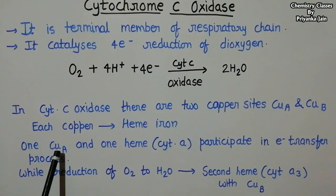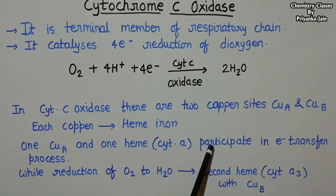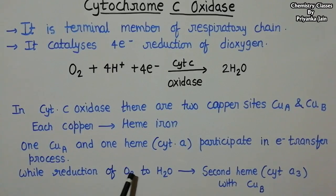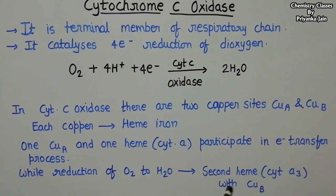One copper atom and one heme of cytochrome a participate in the electron transfer process, while the reduction of O₂ to H₂O is carried out by the other heme — that of cytochrome a3 — together with copper B. These are the important topics from cytochrome that may be important for competitive exams like NET, GATE, or IIT. Thank you.